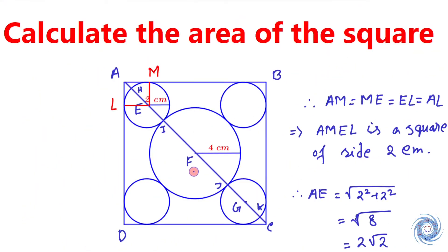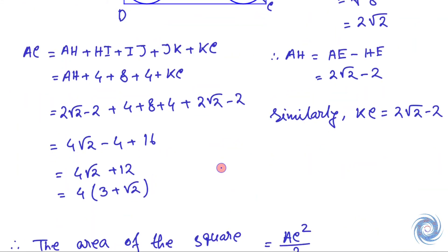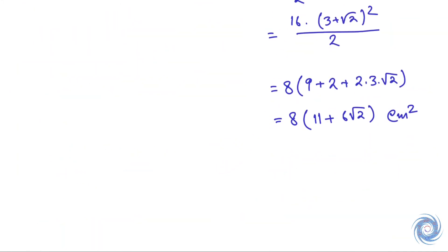We are supposed to find the area of the square, and here the area is given by 8(11 + 6√2) square centimeters. We are done. Thank you.